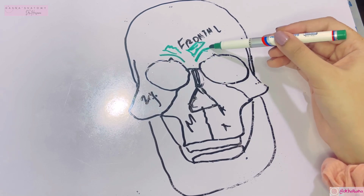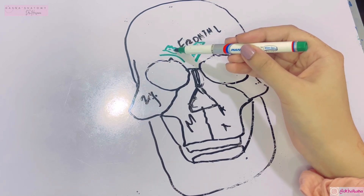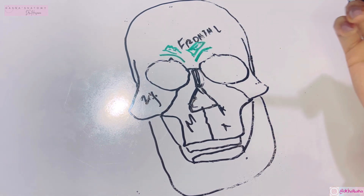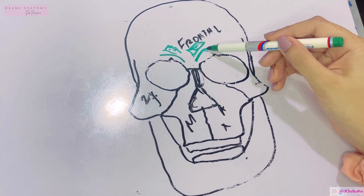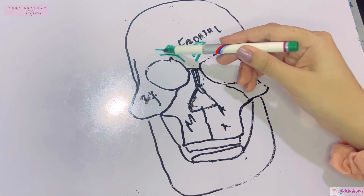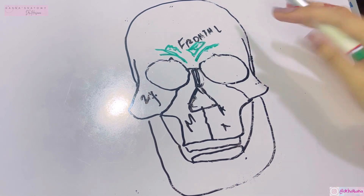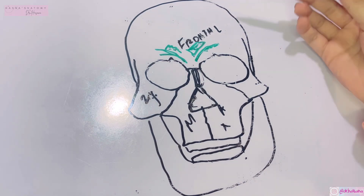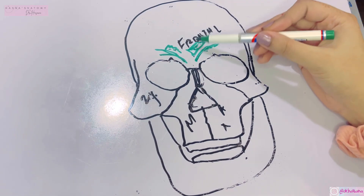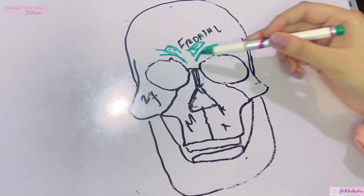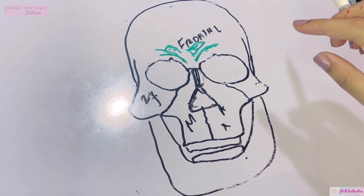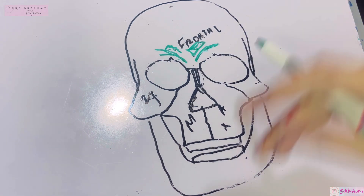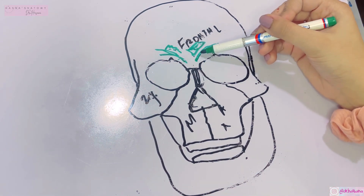The superciliary arches are more prominent in males than in females, whereas the frontal eminences are more prominent in females and children. The superciliary arches also lie in front of the frontal air sinus — a space inside the frontal bone that contains air cells, known as the frontal sinus.